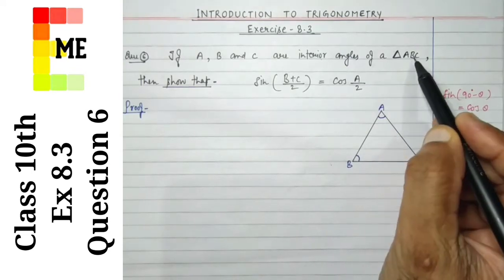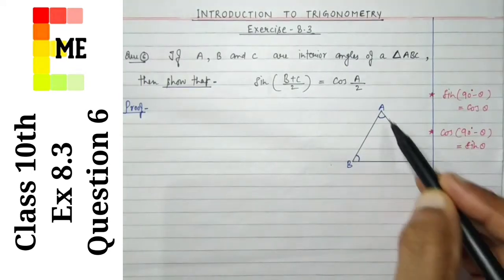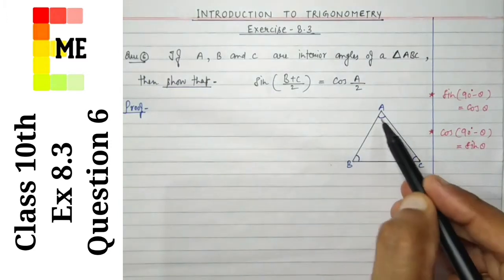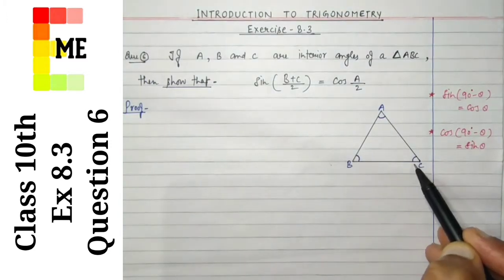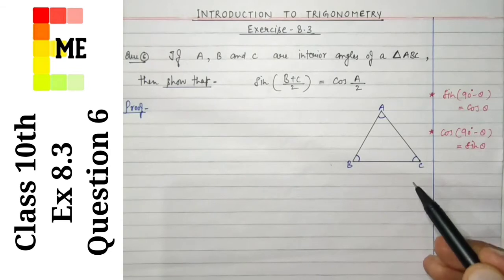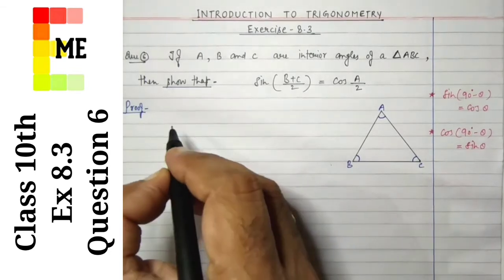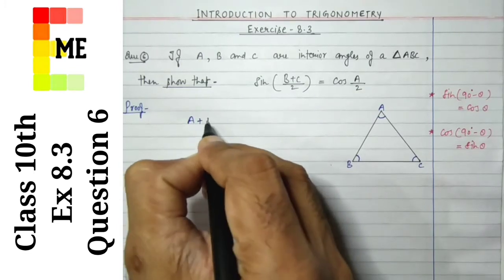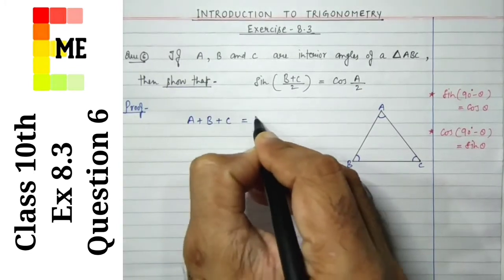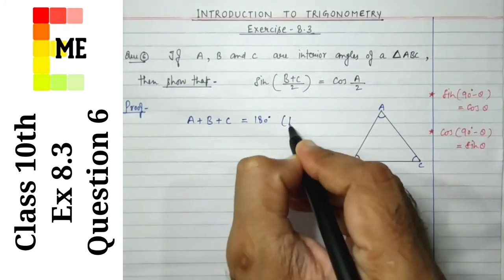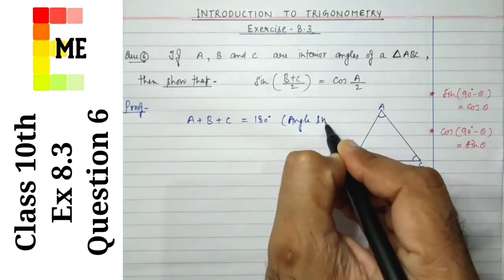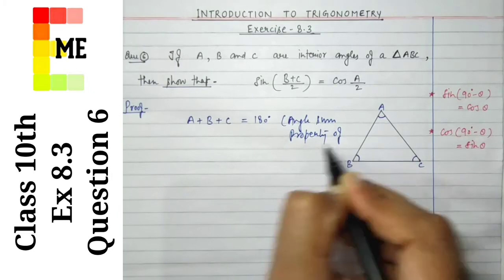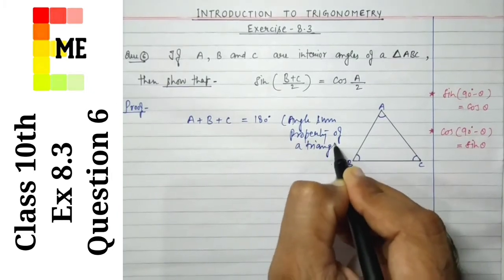So, we have a triangle ABC where A, B and C are interior angles. As you all know, by the angle sum property of a triangle, angle A plus B plus C is equal to 180 degrees.